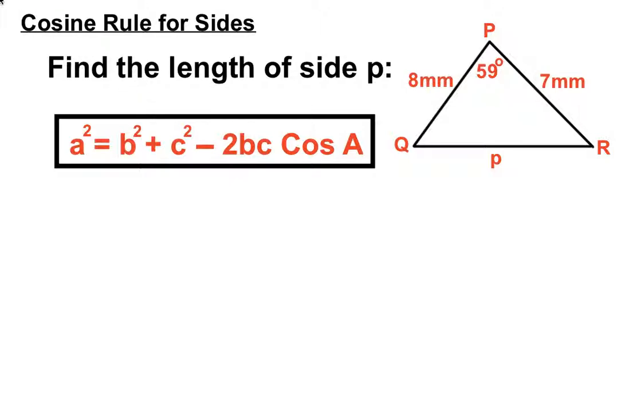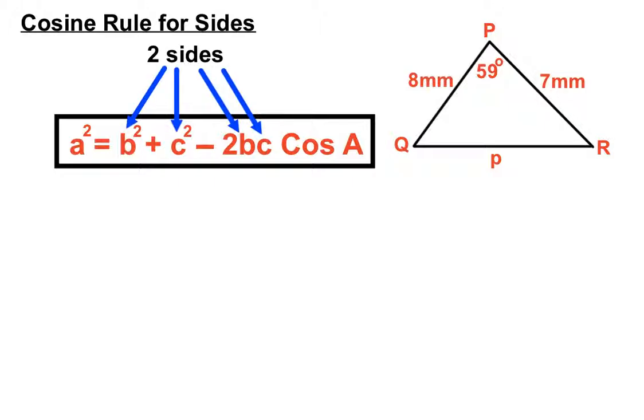So we'll put all those numbers into the formula, or just underneath the formula anyway. The two sides, our eight millimeters and our seven millimeters, will go in all those spots where the arrows are pointing. And our angle, 59 degrees, will go after the cos, so we'll just place them in the right spots here.